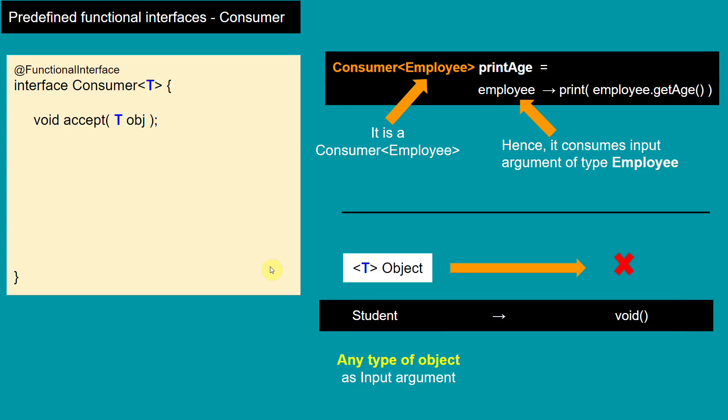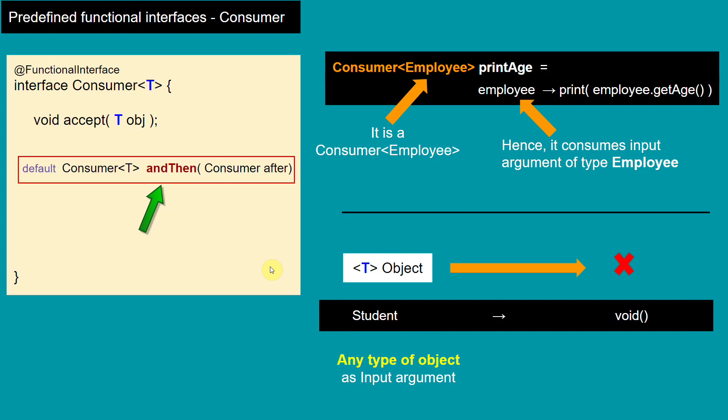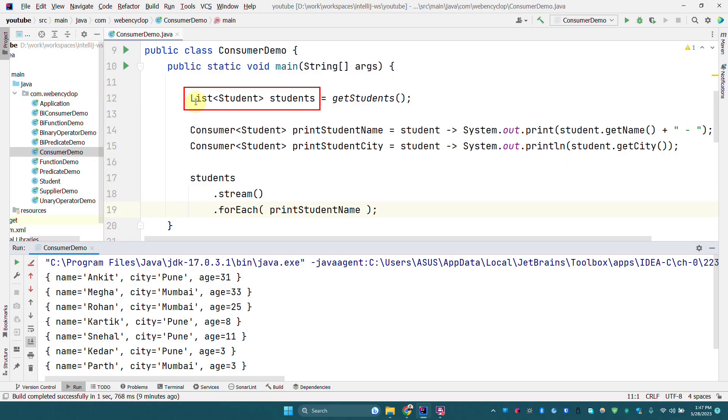In Consumer we have one default method which is called andThen. This default method we can use to chain multiple Consumers together, and we are going to see them in action in the IDE.